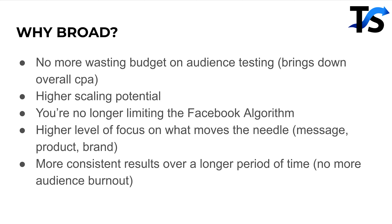A higher level of focus on what moves the needle. If your ad fails on broad, you might go down a rabbit hole testing a bunch of different lookalikes and interests, burning up more money — when you can just use that time to create a new ad that converts better on broad. That's going to move the needle a lot more. Lastly, more consistent results over a longer period of time. Audience burnout happens when you have a small interest, put a big budget behind it, it crushes for a week, and then suddenly your CPA skyrockets — because you're limiting the algorithm.